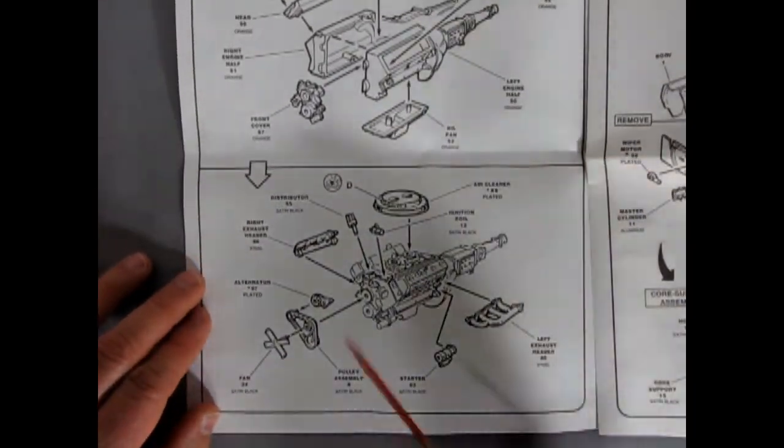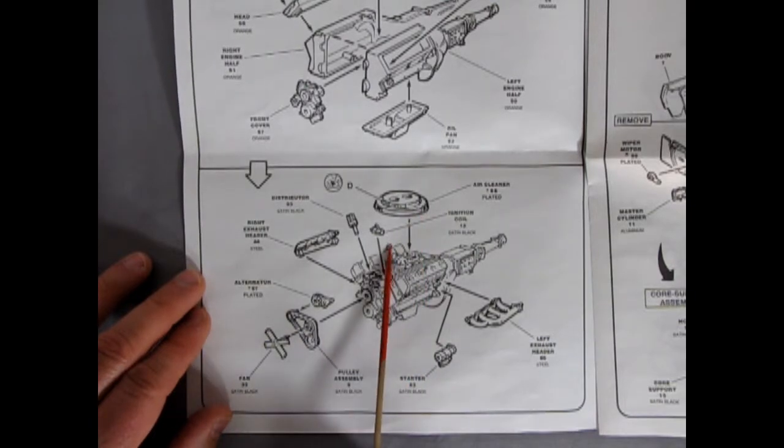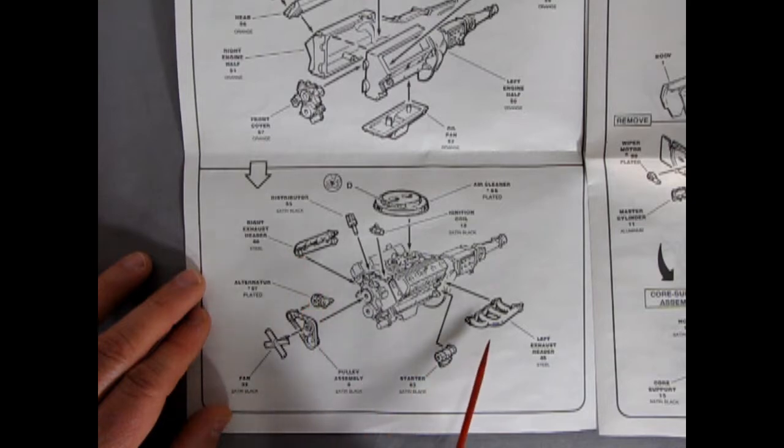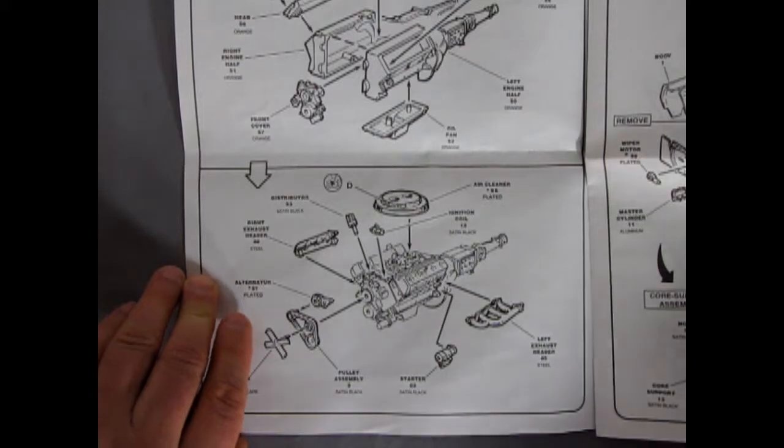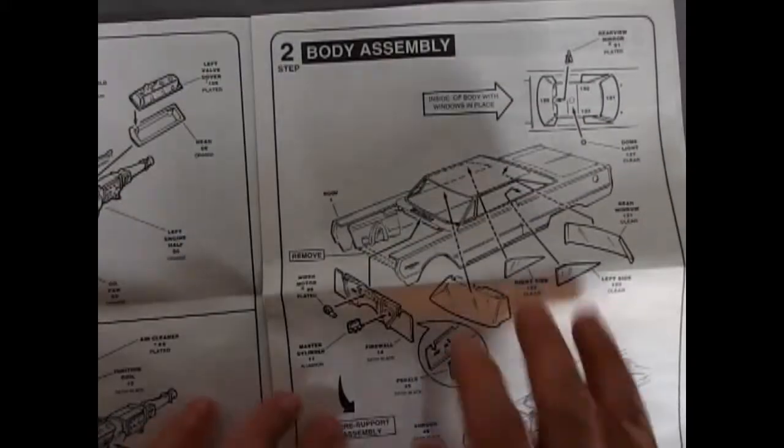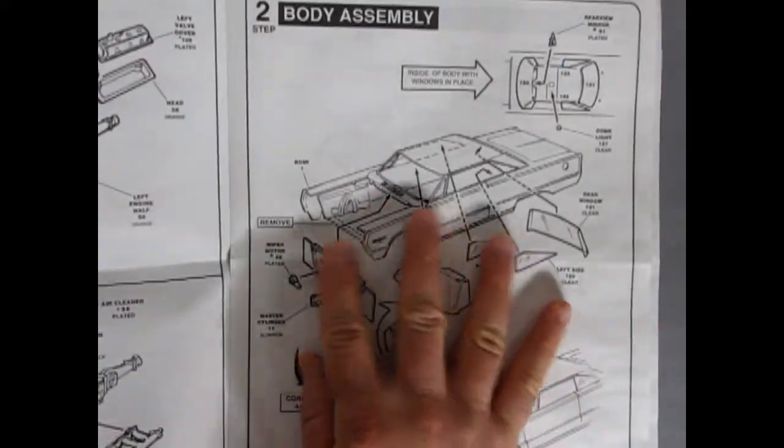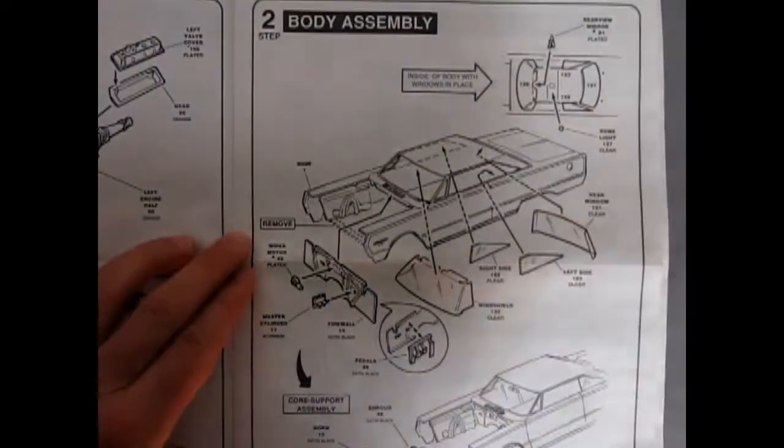We have our air cleaner going in, and then our ignition coil. The distributor up at the front. The right and left exhaust headers and the starter motor. The alternator does have a bracket on it, which is a nice touch. The pulley assembly and the fan. And now this is quite a huge panel coming up here.